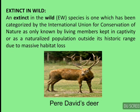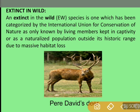Extinct in the Wild is a species which has been categorized by the International Union for Conservation of Nature as only known by living members kept in captivity, or as a naturalized population outside its historic range due to massive habitat loss. An example here is Pere David's Deer.